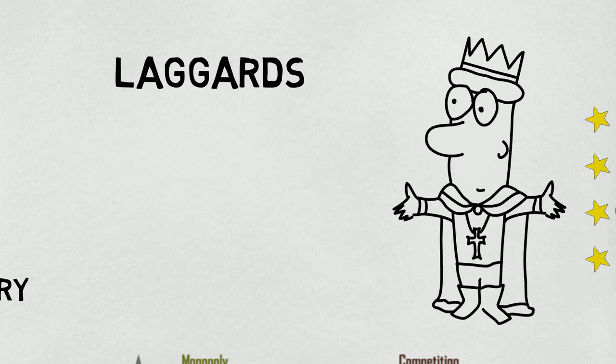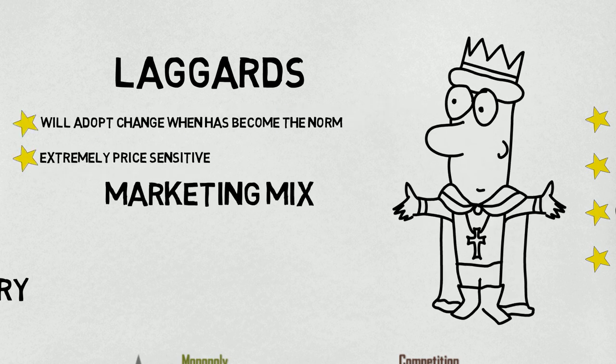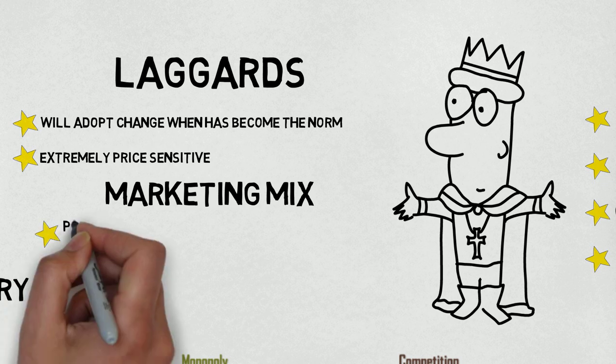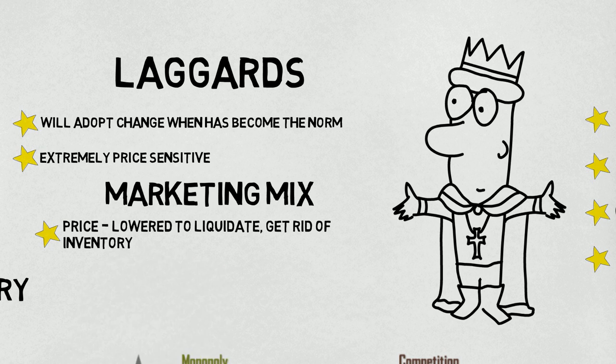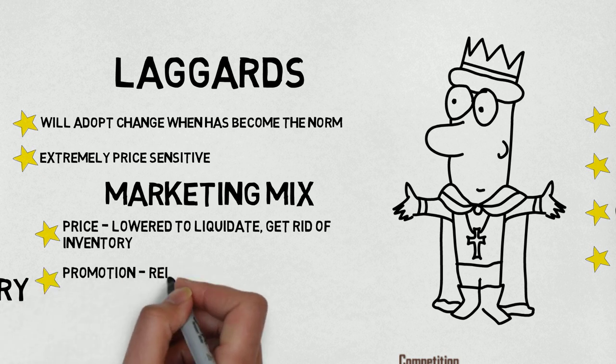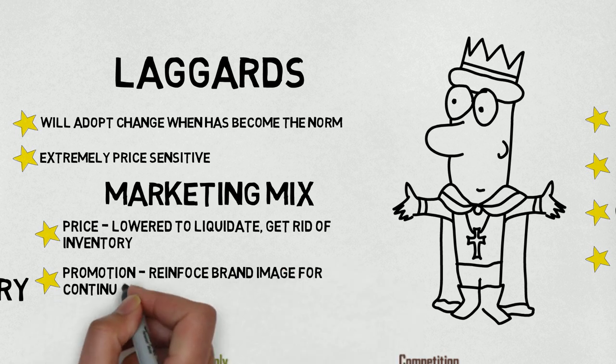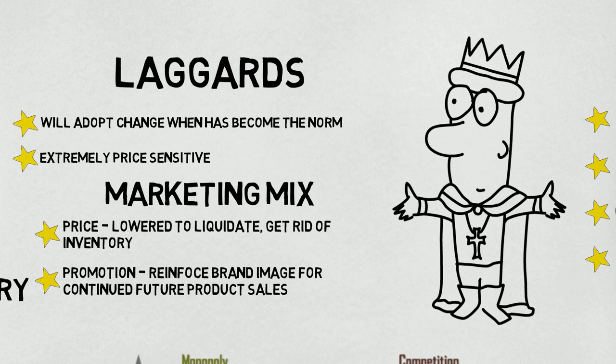During this stage, the marketing mix was modified one last time as follows. Product: Rejuvenate the product packaging to make it new again. Price: Price is lowered to liquidate inventory. Distribution: Sell products on all platforms. eBay, Amazon, retail, distribution, retailing, etc. Promotion: Reinforce brand image for continued product by stating some discounts for additional products on the website.